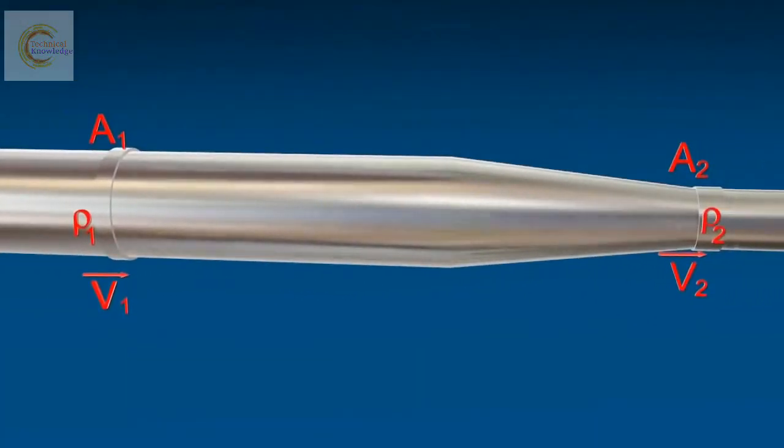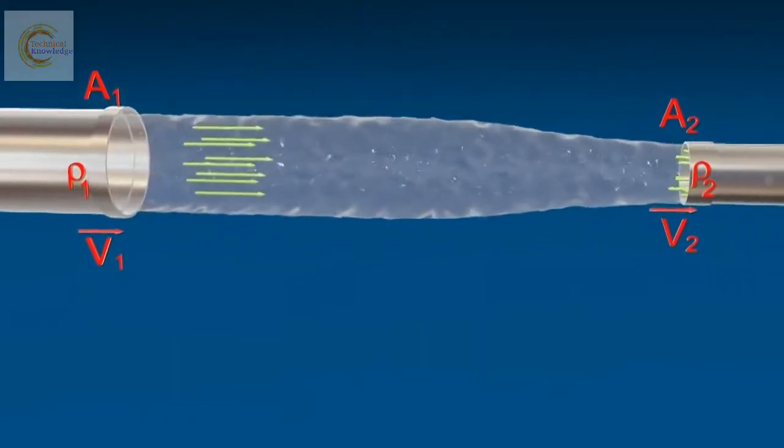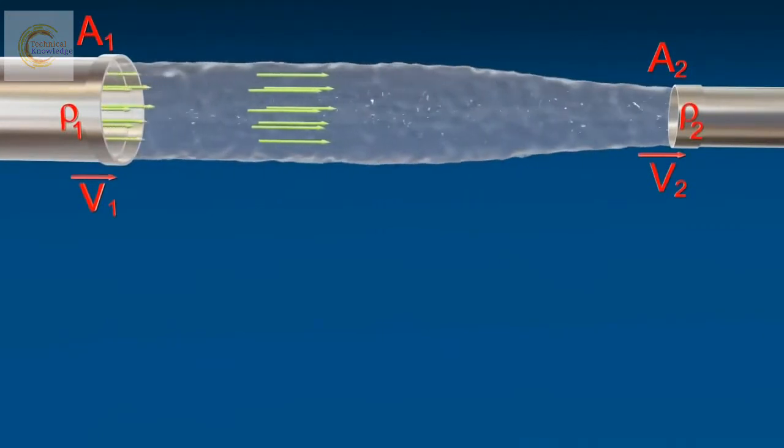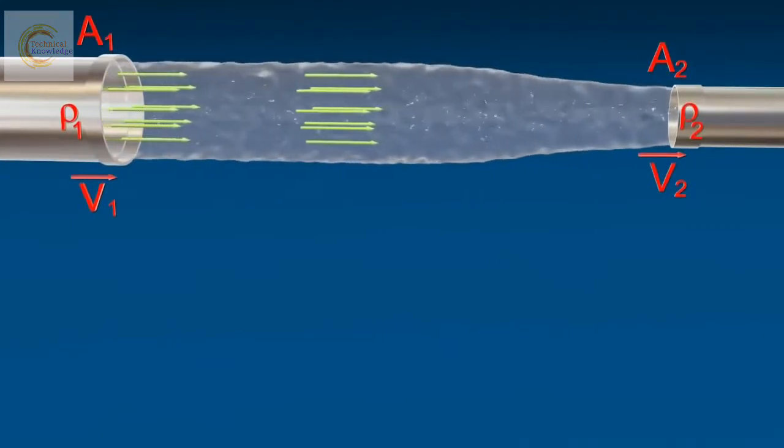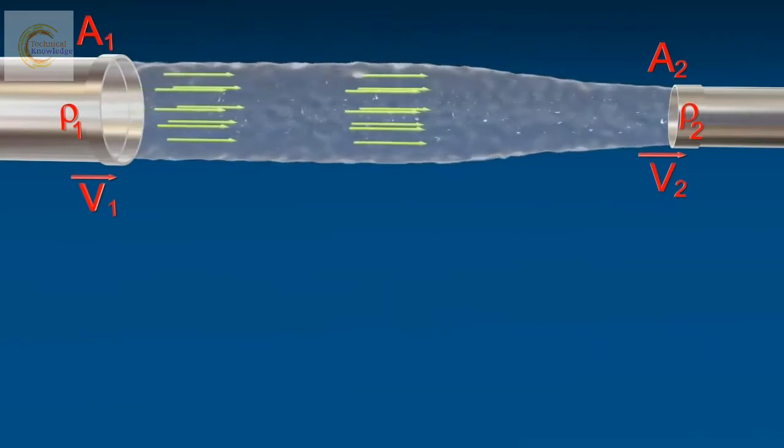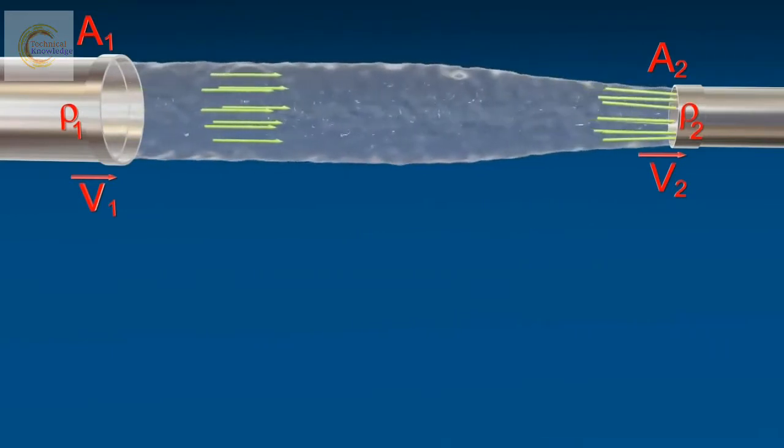Consider a fluid moves through a tube of area of cross section A1 and A2 respectively. The volume of water entering A1 per second and the volume of water leaving A2 per second.